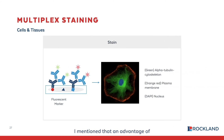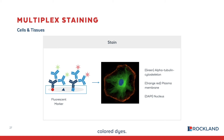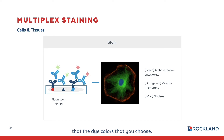An advantage of IF is the ability to multiplex. Multiplexing allows you to target additional antigens in a cell or tissue sample simultaneously, by choosing primary antibodies for additional targets and secondary antibodies conjugated to different color dyes. Multiplex experiments require thorough experimental design: you must ensure antibodies do not cross-react with each other or the tissue, and that the fluorescent dye colors chosen do not have significant spectral overlap.